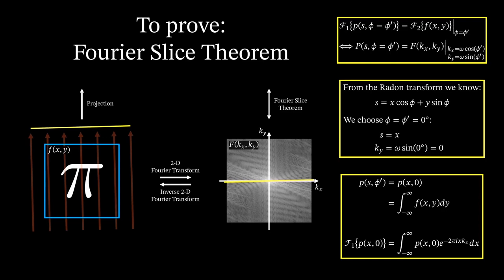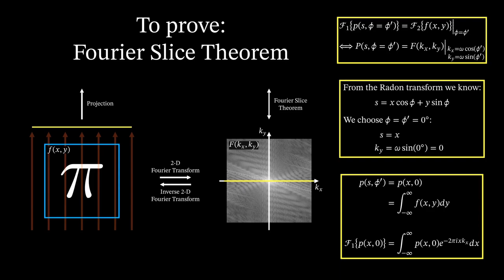When changing the angle phi, the slice in the frequency domain will change accordingly. By showing multiple slices, we see that the center of the k-space contains more data than the outer k-space. It is this exact effect that is compensated by using polar coordinates and accordingly the high-pass filter.